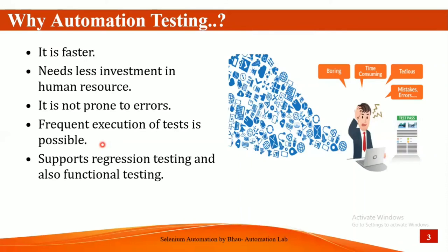Automation is also less prone to errors. A human doing the same job every day — taking test cases, executing them on production and stage, then comparing actual and expected results — can get bored and make mistakes, which impacts the system.